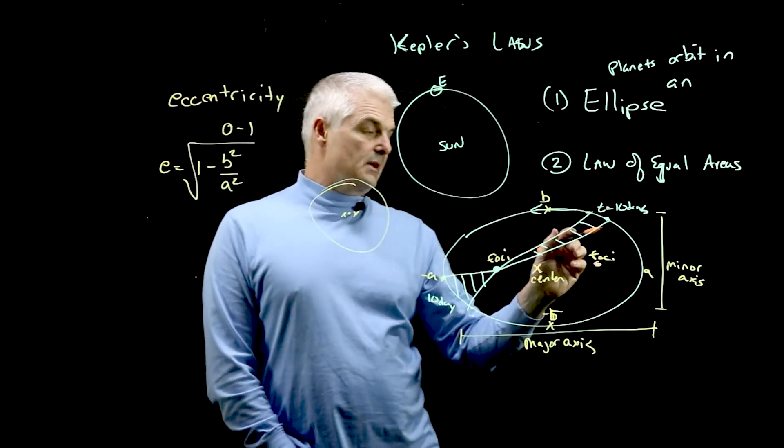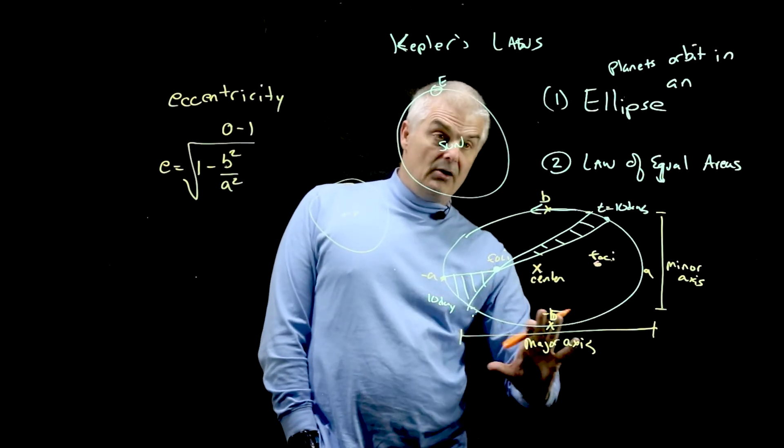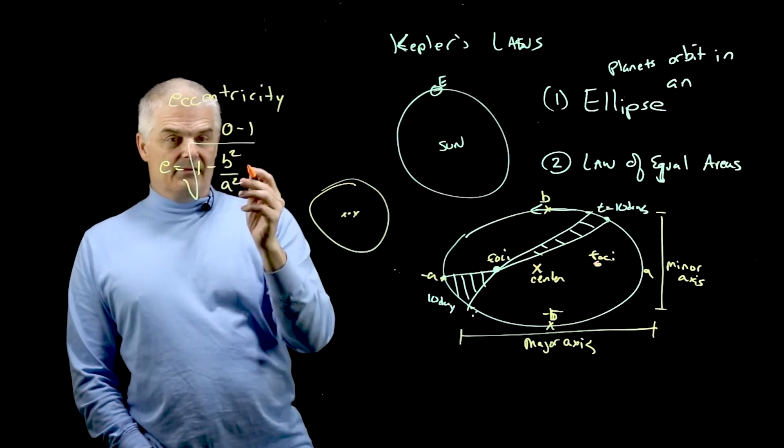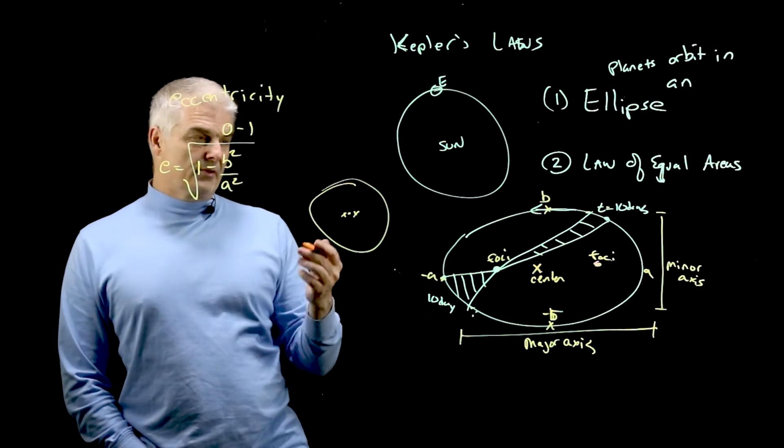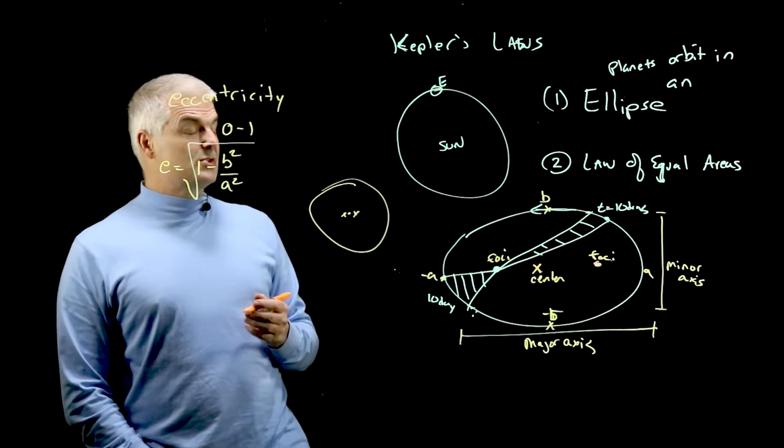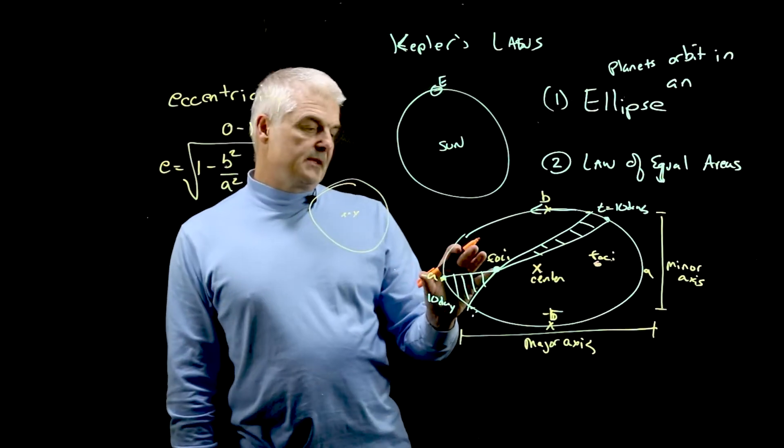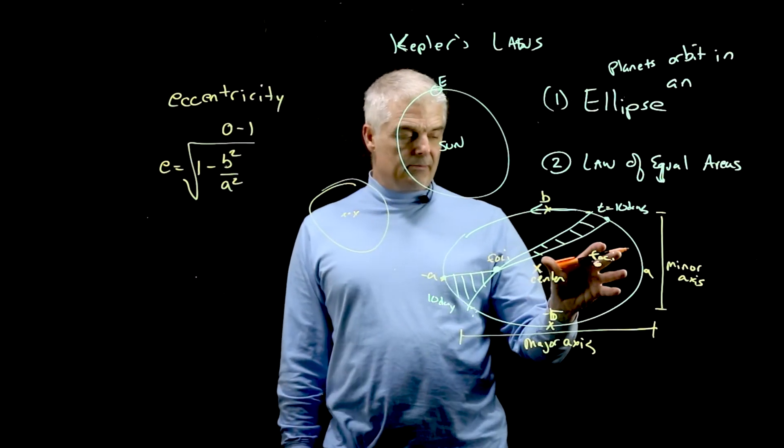So an ellipse, a circle is actually an ellipse where the eccentricity is 0. So anyway, interesting mathematics about how all this works. And for the earth, it's probably very, very close to 0 because of the earth and the sun. Because it's very close to circular but not perfect.